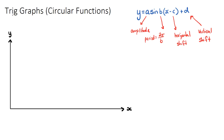In this video we are going to look at trig graphs, which are also called circular functions. Just like a quadratic equation has a general equation of y equals ax squared plus bx plus c, where a, b, and c are numbers that change our quadratic, a trig function also has a general equation — written as a sine b of x minus c plus d.